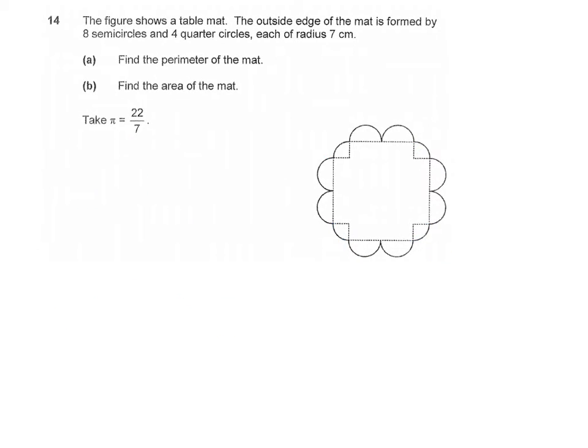Now let's go on to part B, find the area of the mat. Okay, let's look at this figure. We can actually divide this figure into 3 parts. Okay, the first part I will indicate with black color ink. So that will be all the semicircles and the quarter circles.